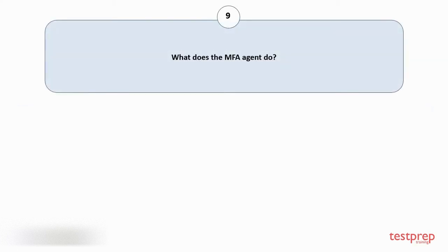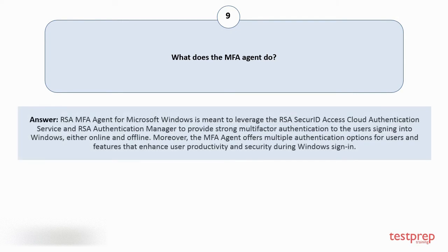Question number 9: What does the MFA agent do? RSA MFA Agent for Microsoft Windows is meant to leverage the RSA SecureID Access Cloud Authentication Service and RSA Authentication Manager to provide strong multi-factor authentication to the user signing into Windows, either offline or online. Moreover, the MFA agent offers multiple authentication options for users and features that enhance user productivity and security during Windows sign-in.